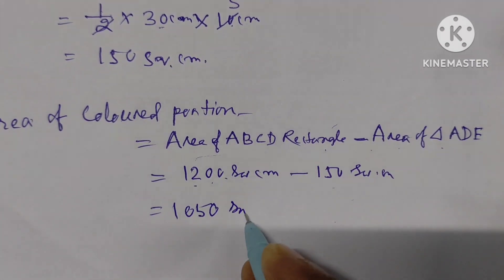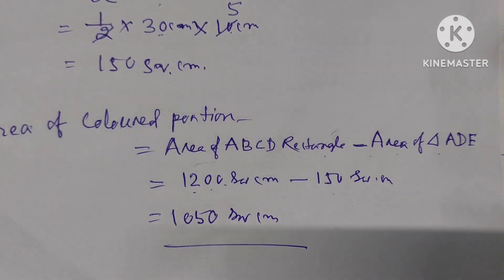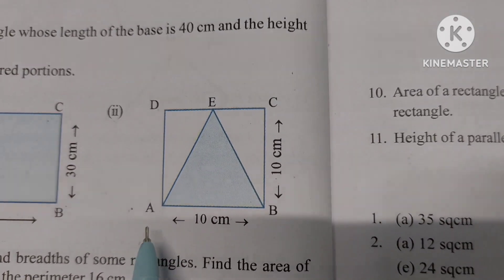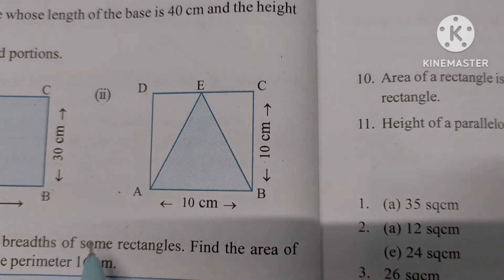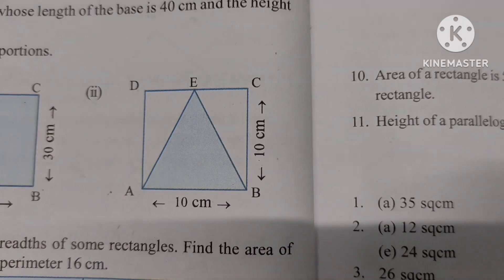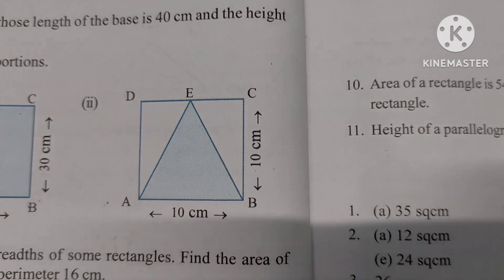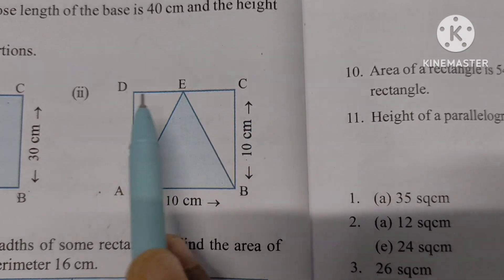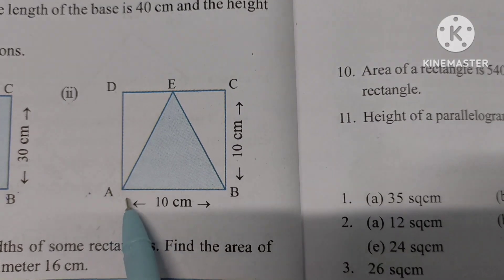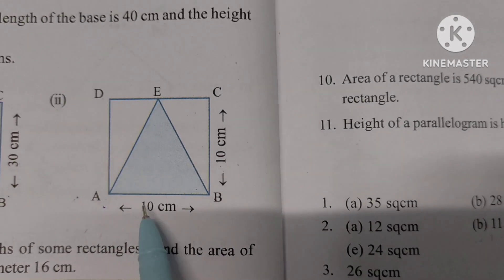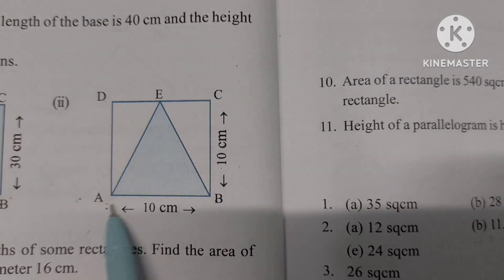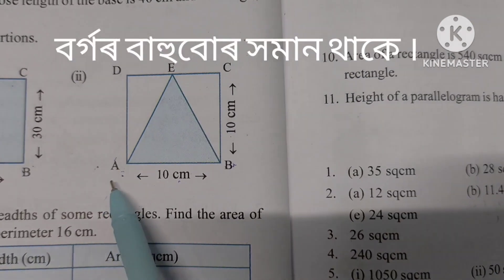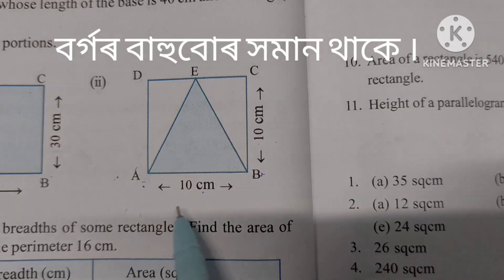Now, ABCD is a square. We know that the sides of a square are equal, that means AB = BC = CD = DA. The diagonal or side BD is 12, and we need to find the area of the colored portion of the square.